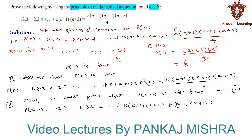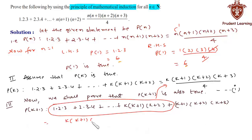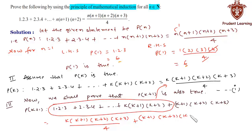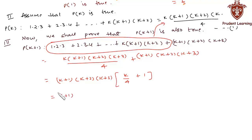From equation 1, we substitute the value of the sum up to k terms as k(k+1)(k+2)(k+3) divided by 4. Adding the next term (k+1)(k+2)(k+3), we get k(k+1)(k+2)(k+3)/4 + (k+1)(k+2)(k+3), which simplifies to (k+1)(k+2)(k+3)(k+4) divided by 4.